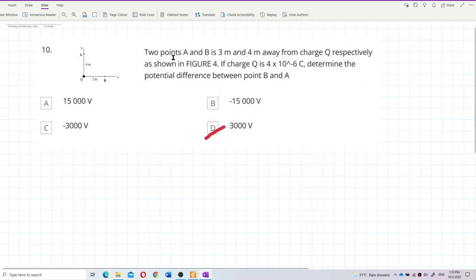Okay, two points A and B, A and B is 3 meters and 4 meters away from charge Q respectively, as shown in the figure. If charge Q is 4×10^-6 coulombs, determine the potential difference between point B and A.